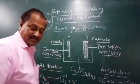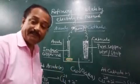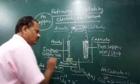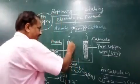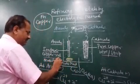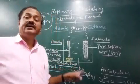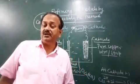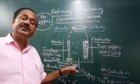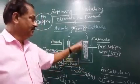Below the anode there will be an accumulation of anode mud or anode sludge. Anode mud, also called anode sludge, consists of impurities that do not take part in the reaction. Anode mud is very significant because it contains particles of precious metals like silver, gold, platinum, and molybdenum, and so it can be used for the recovery of those precious metals.